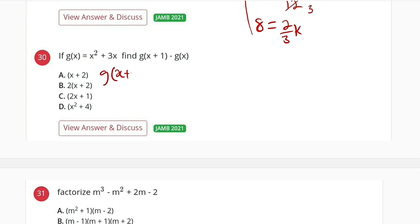That is, g of x plus 1 is equal to x plus 1 all squared, then plus 3 multiply by x plus 1.